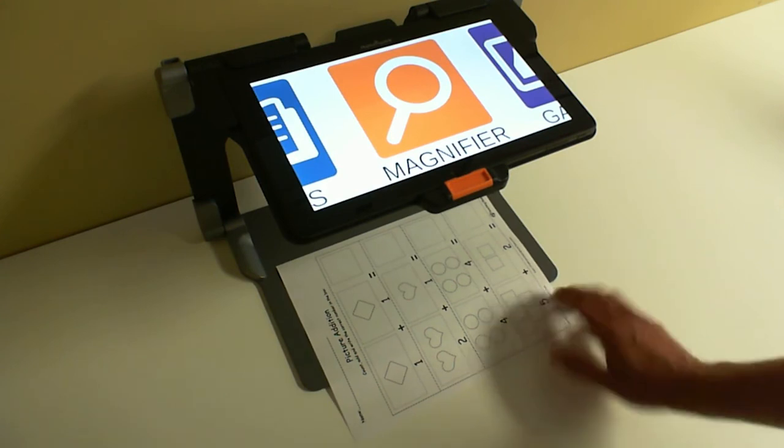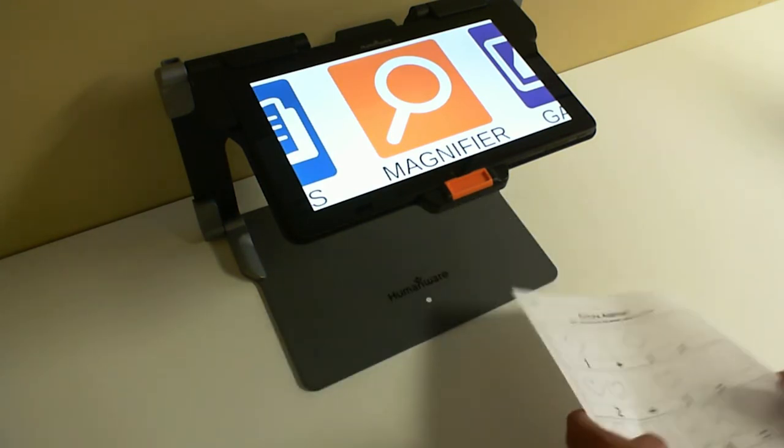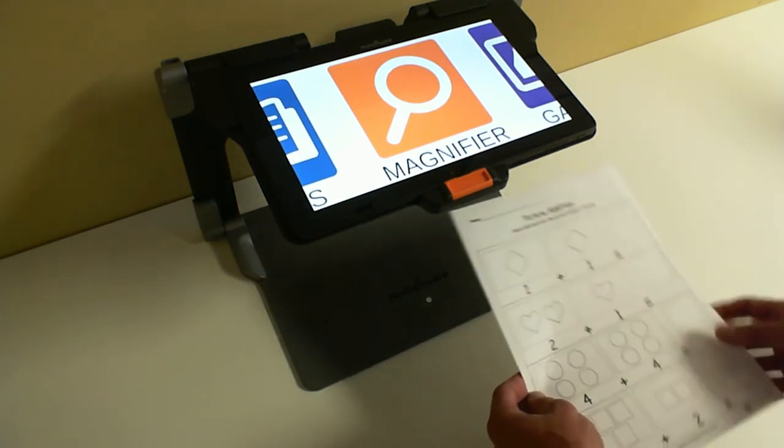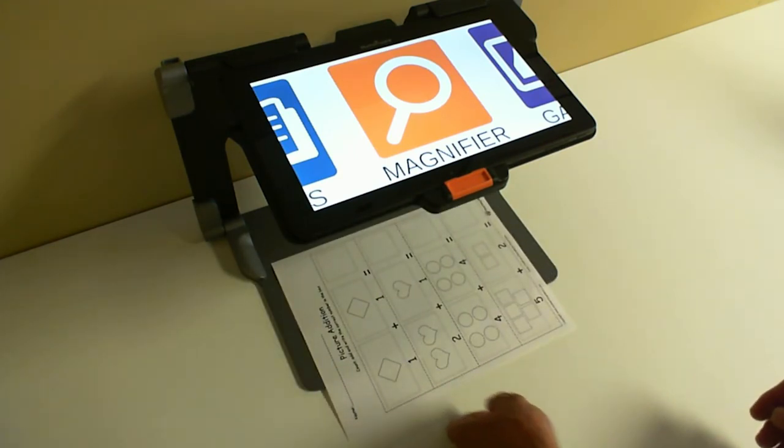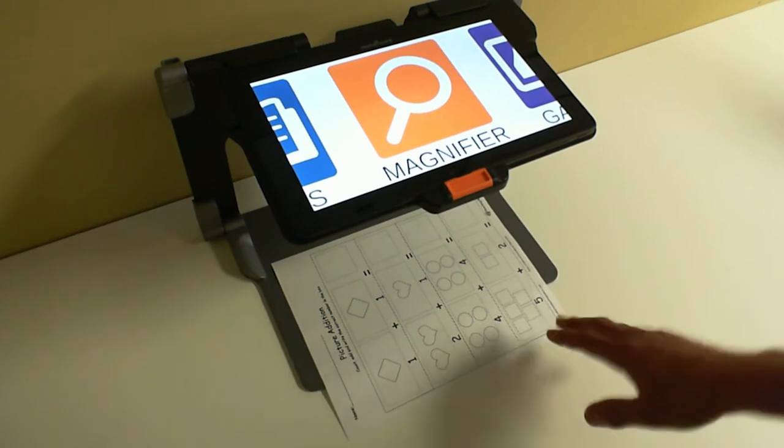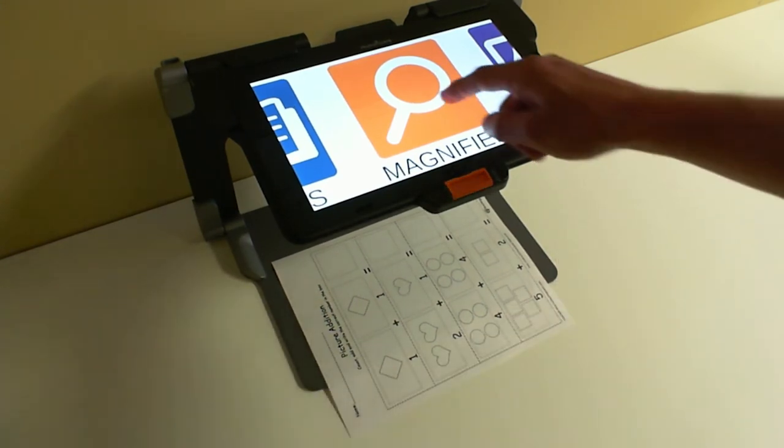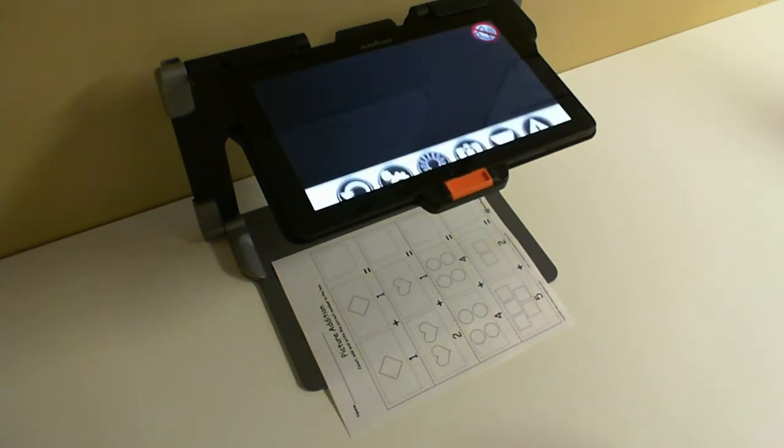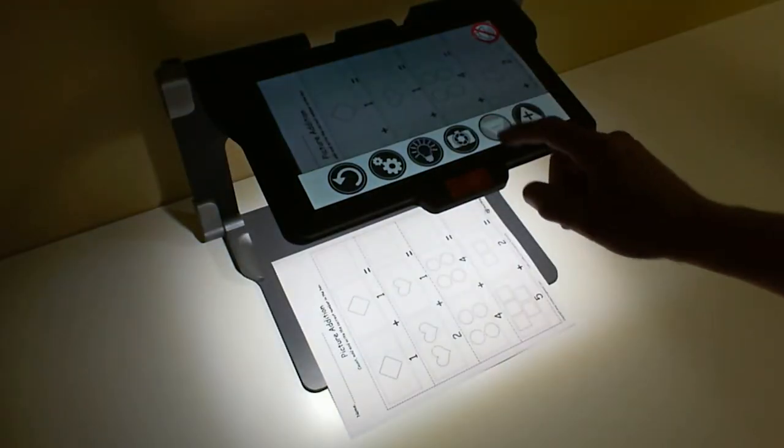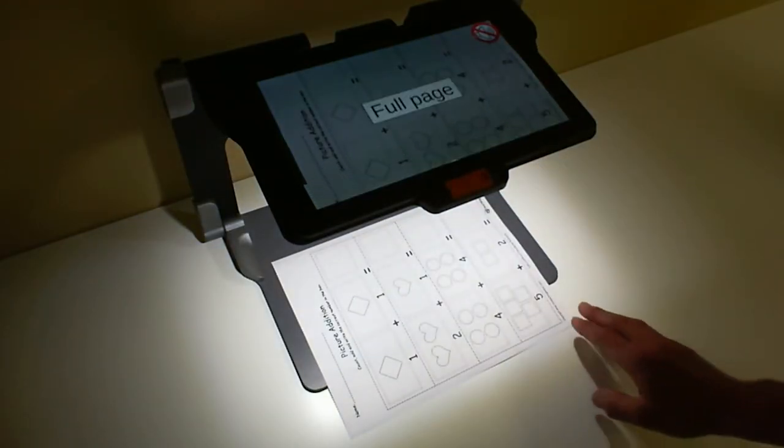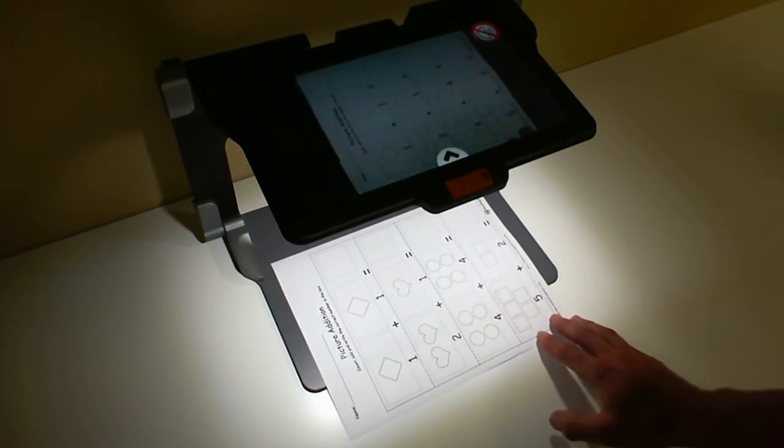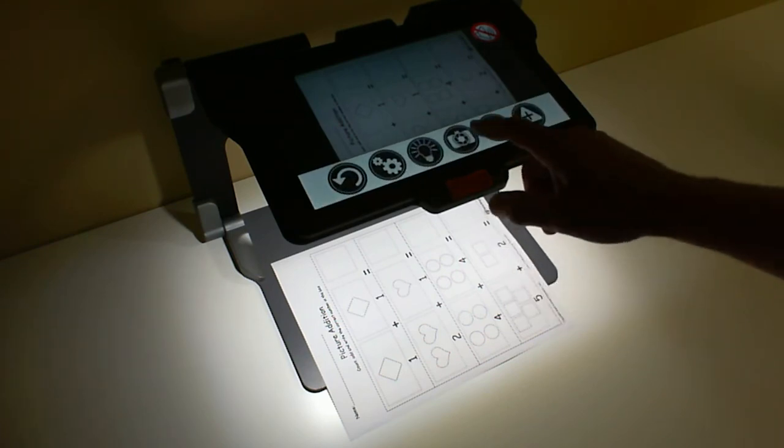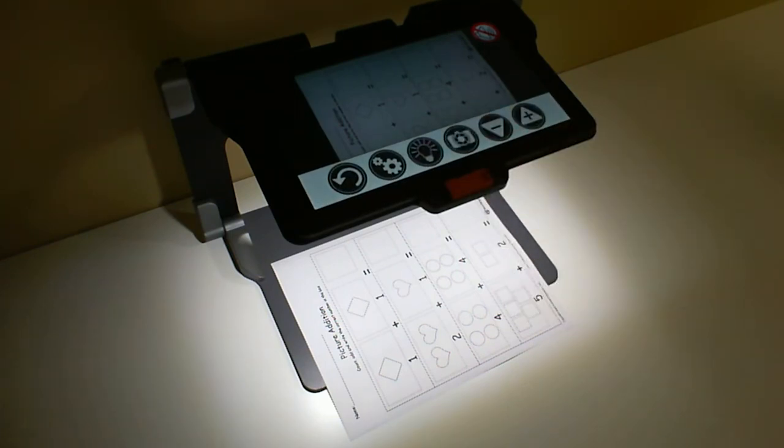Let's say my teacher has given me an assignment and I would like to write on it and submit it to my teacher. The thing to do is place the document underneath the Connect 12, go into Magnifier. I would like to have a full page capture, so I'm going to zoom out. I will capture the document.